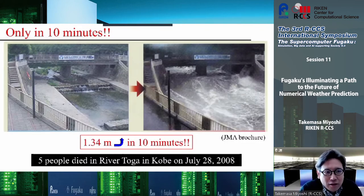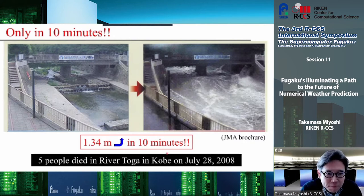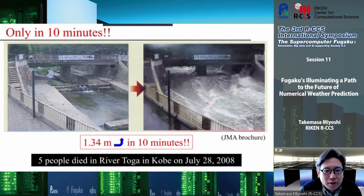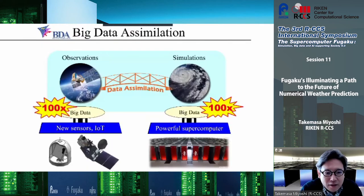We had a very strong motivation for our research on very short-range weather prediction. This happened in 2008 in Kobe in the summer — this river became like this only in 10 minutes, and five people unfortunately died at that time. We would like to predict this type of event.